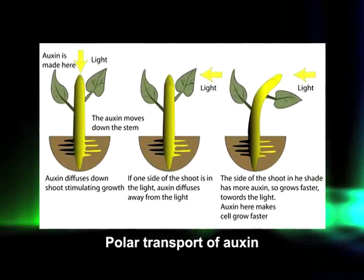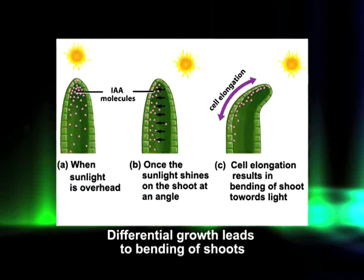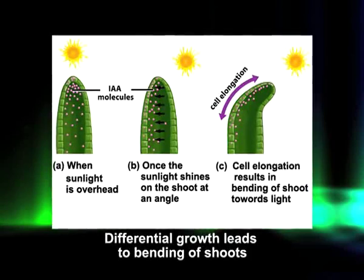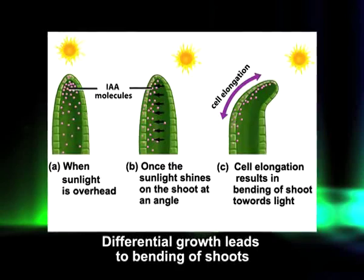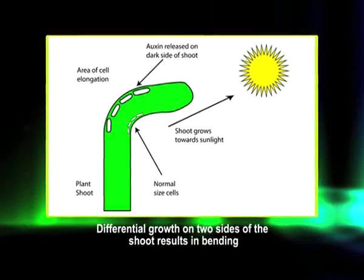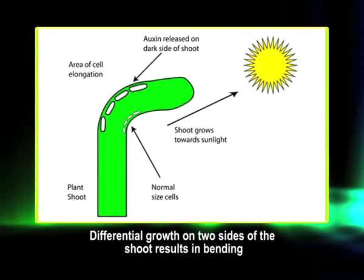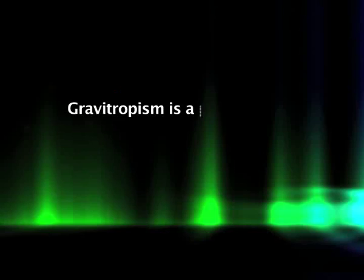Shoots exhibit positive phototropism — when illuminated from one direction, shoots bend and grow in the direction of light. Auxin produced in the tip normally moves basipetally from the apical region to the zone of elongation. When a shoot is illuminated with a unilateral source of light, PIN proteins in the plasma membrane are redistributed to the lateral face of cells. Auxin is pumped out laterally and accumulates more on the shaded side of the coleoptile, then transported basipetally to the zone of cell elongation, stimulating faster elongation on the shaded side and causing the shoot to bend towards the light.